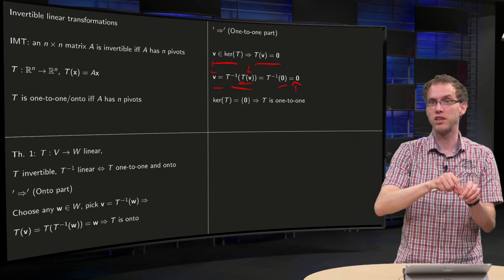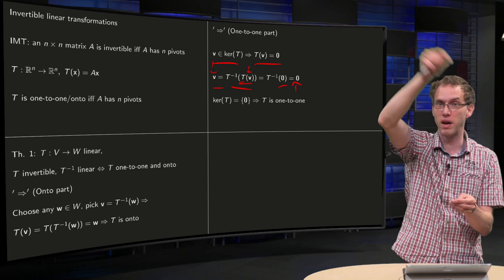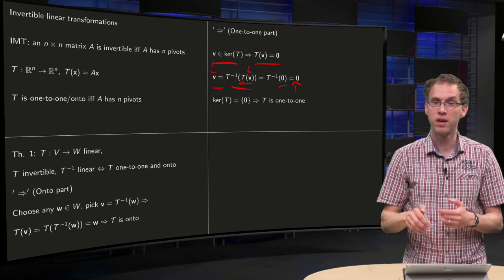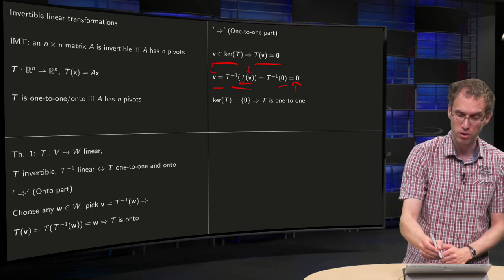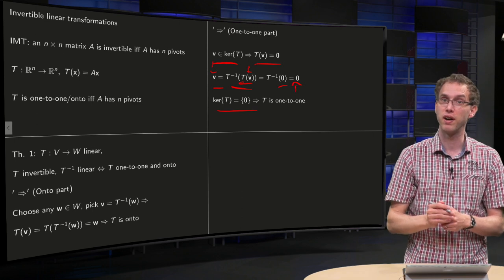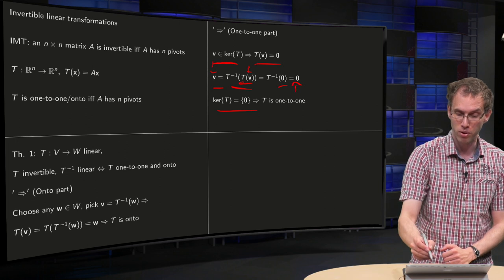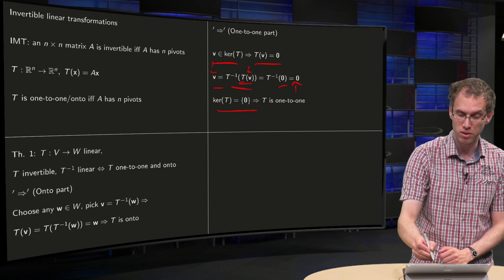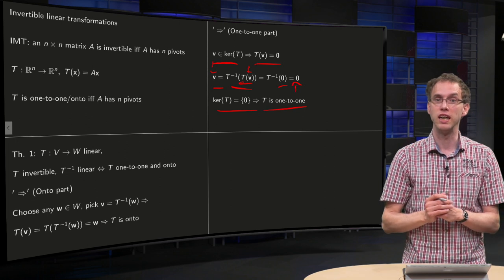So that gives you that the kernel of T is only consisting of the zero vector, and that's the theorem we saw earlier, if the kernel of T is trivial, then T is one-to-one. Now the other way, well, that's actually the important way for us, we'll only give a sketch of the argument.